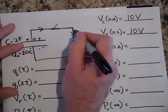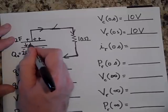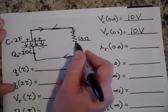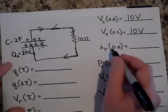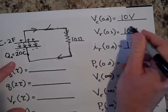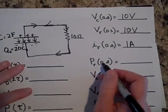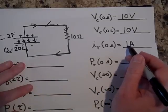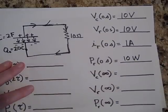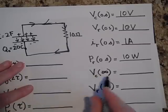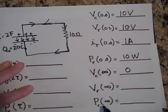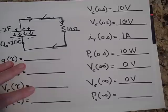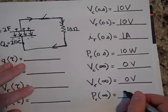Current flows this way. The electric field: starting here, we go up 10 volts, and going with the current we come down 10 volts. The current at zero seconds is 10 volts divided by 10 ohms, which is 1 amp. The power at zero seconds is I squared times R — 1 amp squared times 10 ohms — so 10 watts. At infinity, the capacitor is fully discharged: voltage is 0 volts, resistor voltage is 0 volts, and power is 0 watts since current is zero.